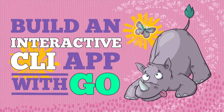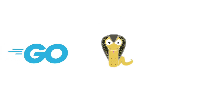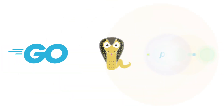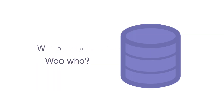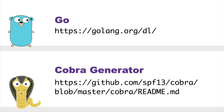In this tutorial, we will learn how to build an interactive command line app with Go, Cobra, and PromptUI. We will see how we can prompt the user for input data and persist this data to an SQLite database. To follow along, you will need to have Go and the Cobra Generator installed.